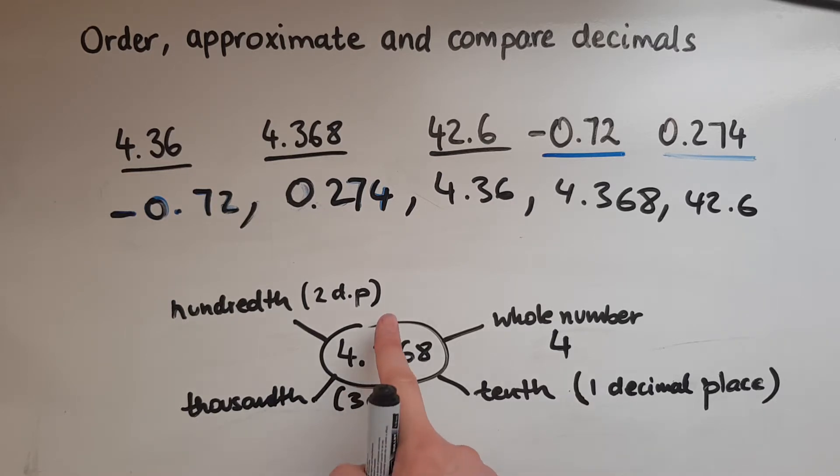So we need to round up to this point. So get rid of the 6 and the 8, but the 6 impacts this. So it's a six, so we're going to round up. So this is going to be 4.4.